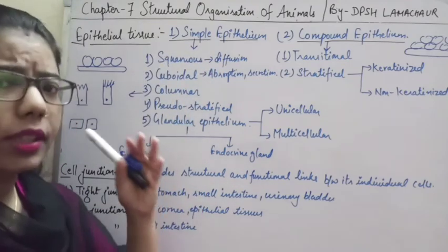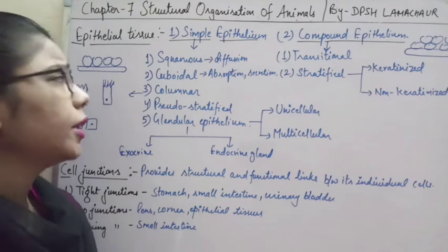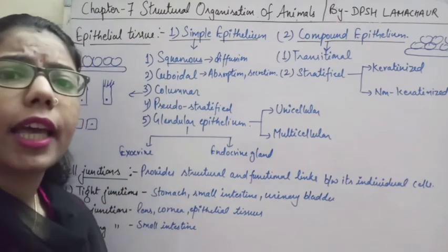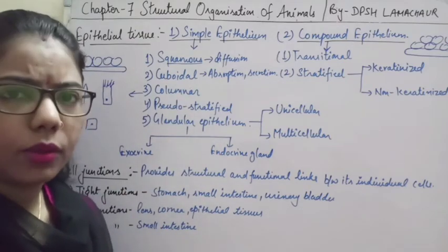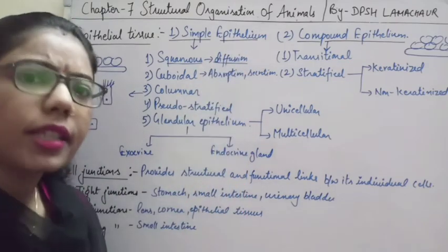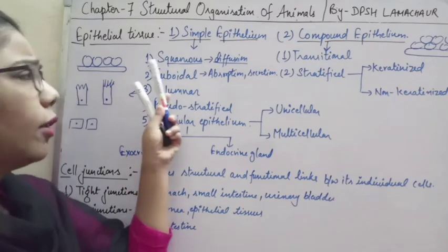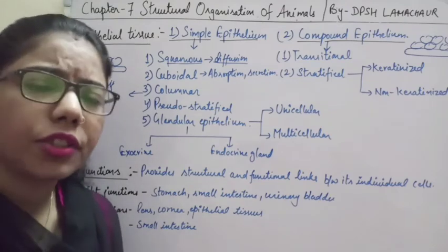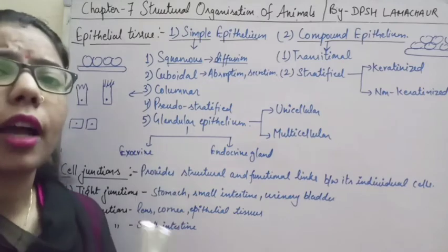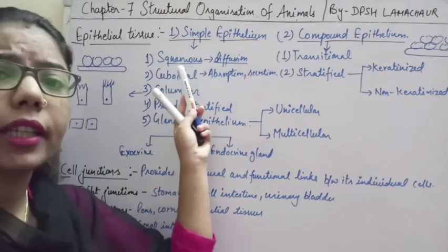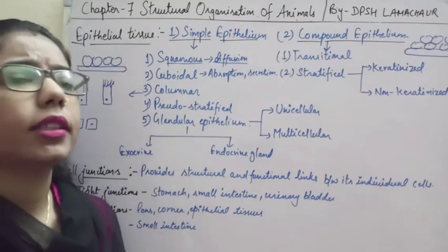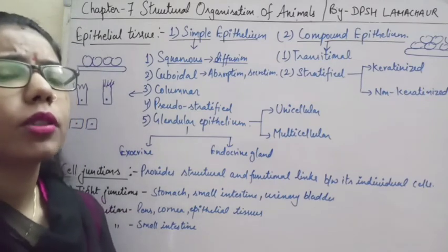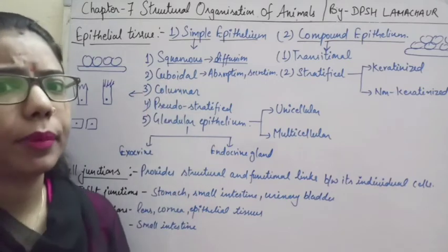The function of squamous tissue — since it is very thin — is helpful for the exchange of gases, a process known as diffusion. In our body, squamous epithelial tissue can be found where proper exchange of gases occurs, such as in the lungs, specifically in the bronchioles, and in the walls of blood capillaries.